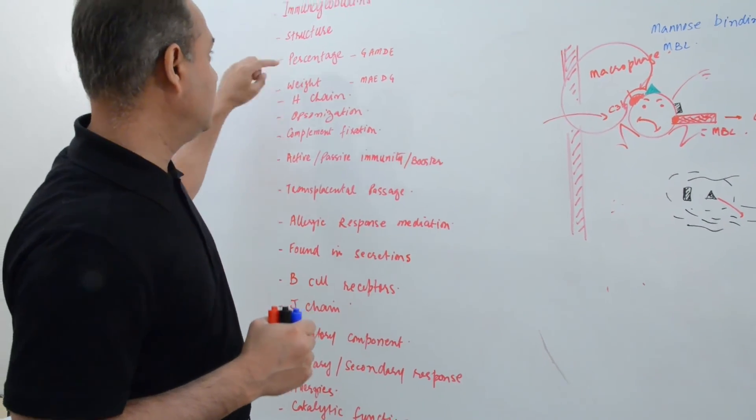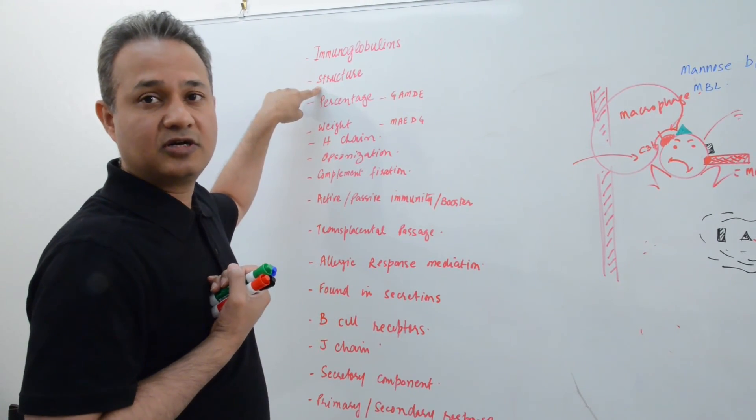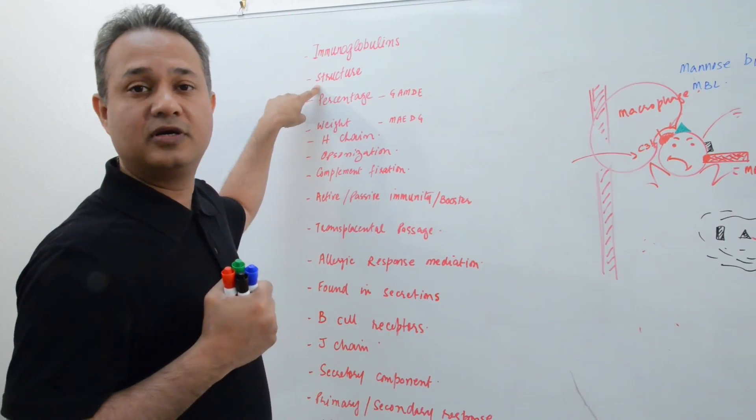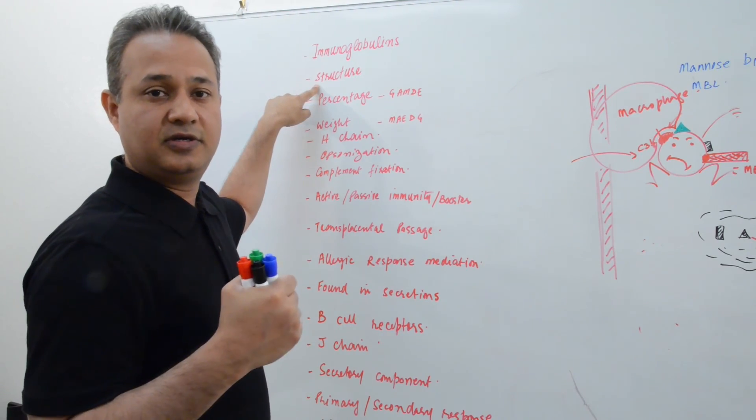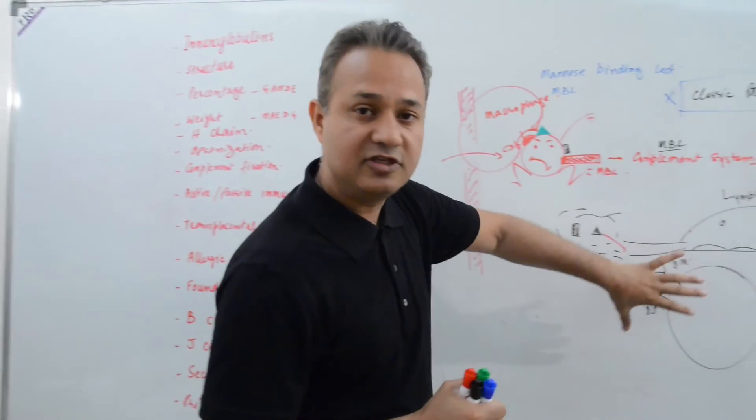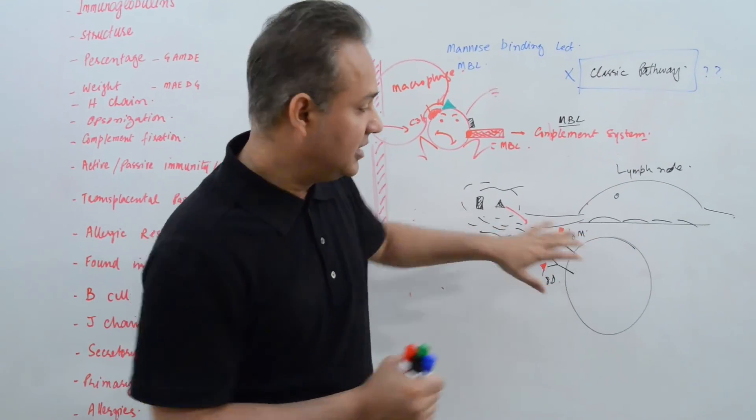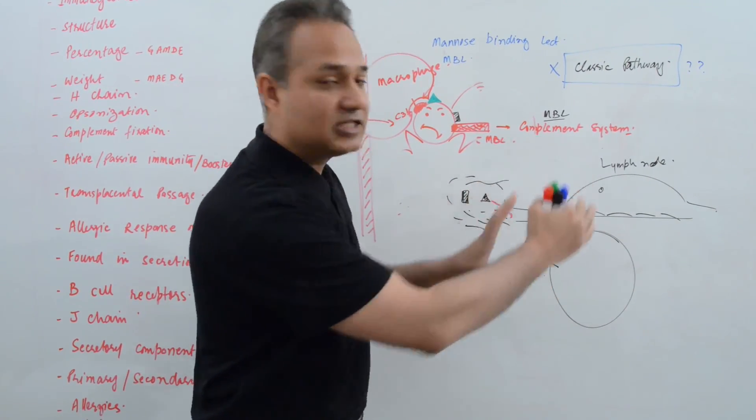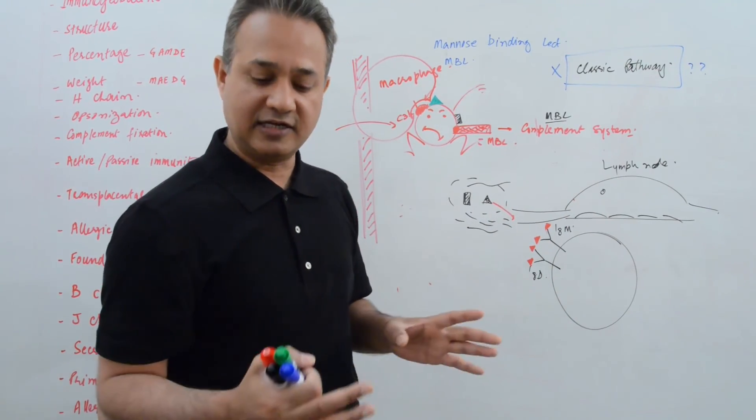These are the kind of things that we need to cover. So let's start from here. Structure, or what do we mean by monomer, dimer, and pentamer? These are or multimer, right? So come back here. We'll leave this story here for the time being. We will continue from this story. Let's treat the immunoglobulins a little bit.